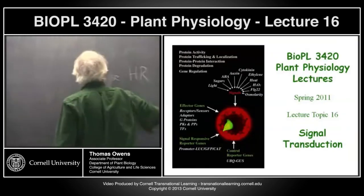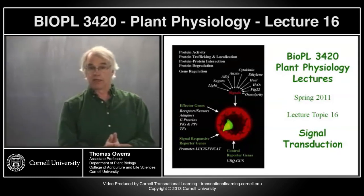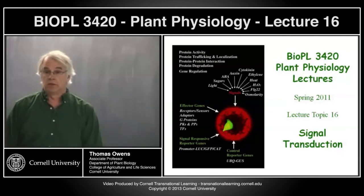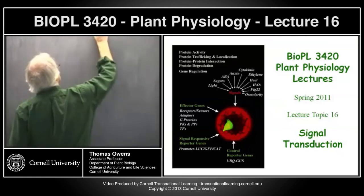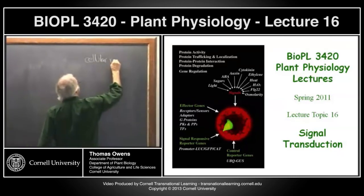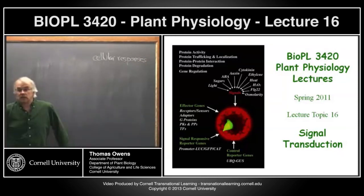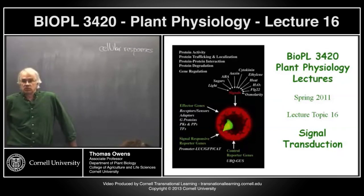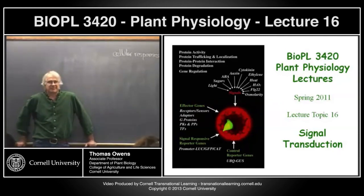Signal transduction pathways accomplish something common to all cells. One characteristic we describe for all cells is that they're responsive to their environment. What are some general cellular responses to environmental cues? Changes in water potential, movement — which at the cellular level involves the cytoskeleton — and metabolism, which means what's being affected is likely enzymes.